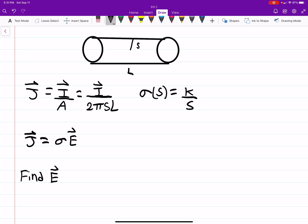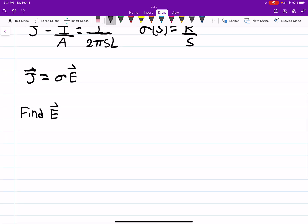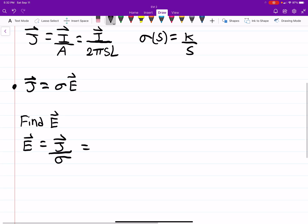So this is actually pretty easy using Ohm's law. Ohm's law is right here. We can see that the E field is equal to our current density divided by sigma. And we already talked about what j was equal to above, so I'm just going to plug that in.